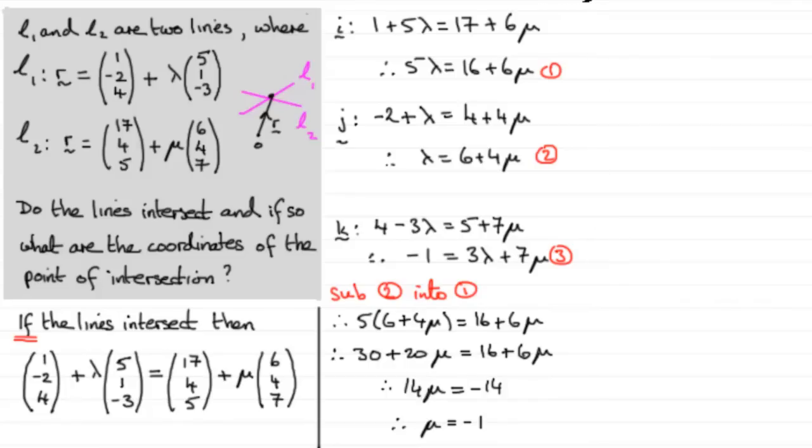So, all I need to do now is just work out then what lambda is going to be. And I could substitute mu equals minus 1 then into, say, equation 2. So, if I sub mu equals minus 1 into equation 2 then, what do we end up with? Well, we get lambda equals 6 plus 4 times minus 1. So, 6 minus 4, that gives us lambda equals 2.